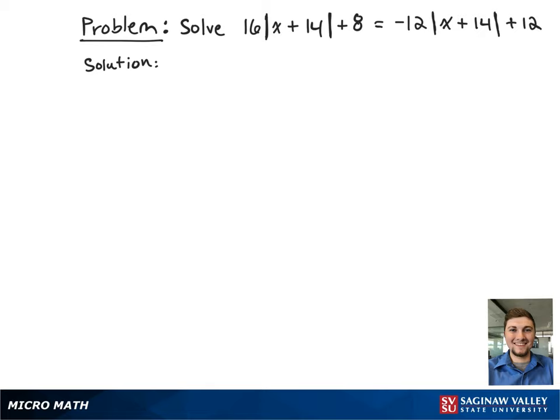Here we have the absolute value equation 16 times the absolute value of x plus 14 plus 8 equals negative 12 times the absolute value of x plus 14 plus 12.